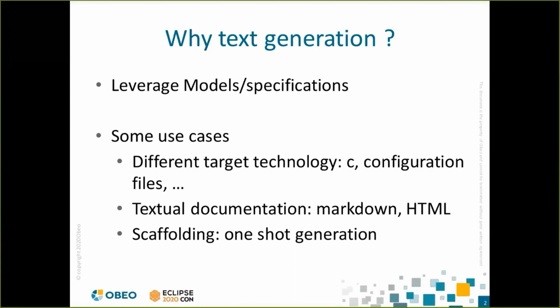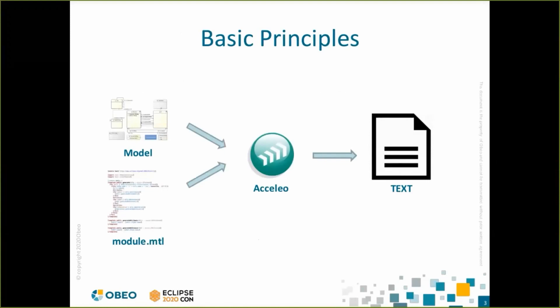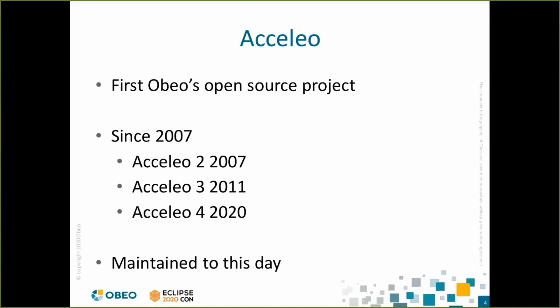To generate text with Acceleo, you will need a model that will be used as a data source and a module file that contains the structure of the targeted text. Acceleo will then apply templates from provided modules to each matching element of the model. The result is an arborescence of text files. Our solution for text generation is Acceleo, the first open source product developed at Obeo, maintained since 2007 to this day.